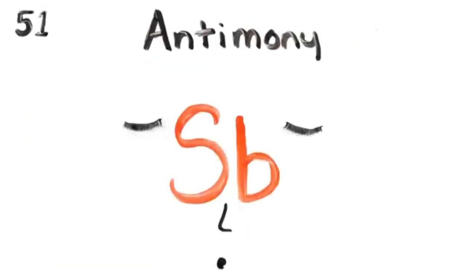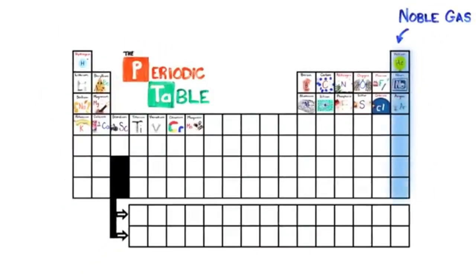Protactinium, tantalum, tellurium, and iodine, adenine, and zirconium. This is the Periodic Table, noble gas is stable, halogens and alkali react aggressively.